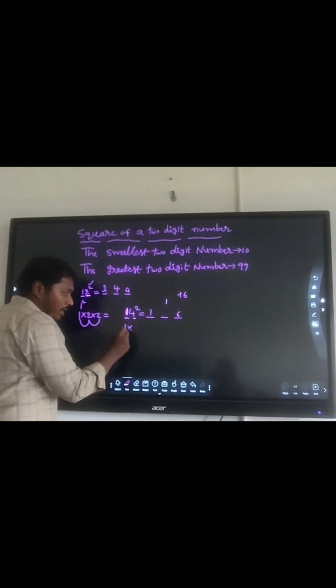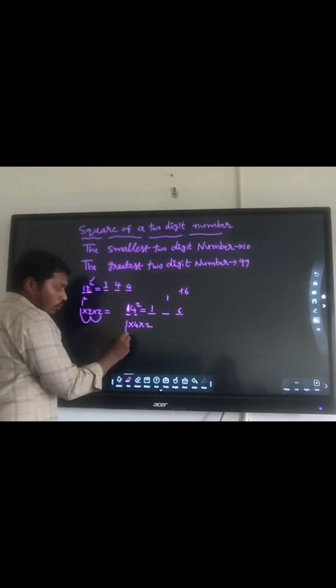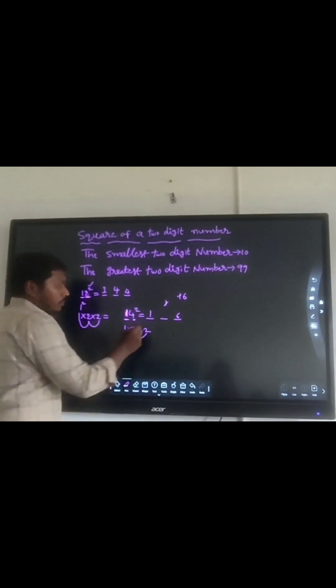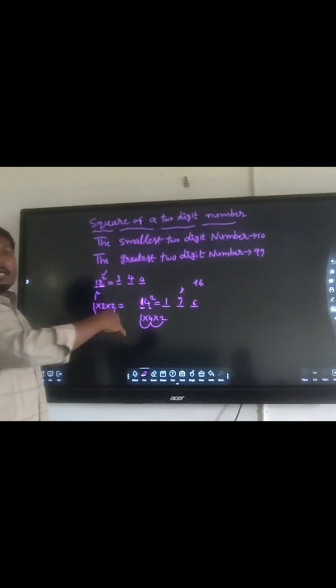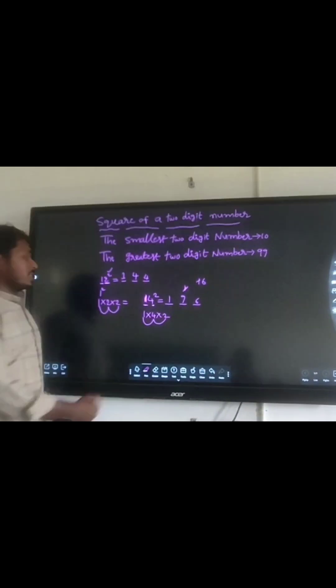Again, 1 into 4 into 2. 1 times 4 is 4, times 2 is 8, plus 1 carried forward equals 9. 9 is the middle digit. So 196 is the square of the number. 14 square is 196.